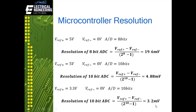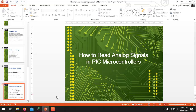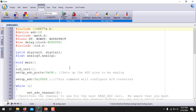The advantage of using an external reference is that you can change the reference voltage to 1 volt, 2 volts, or 3 volts to achieve better resolution. This concludes the brief introduction to A-to-D conversion in microcontrollers. Now let us get back to writing the main program for reading analog signals.